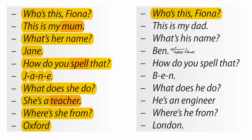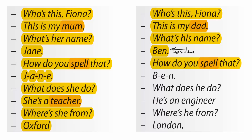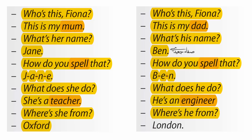Who's this, Fiona? This is my dad. What's his name? Ben. How do you spell that? B-E-N. What does he do? He's an engineer. Where's he from? London.